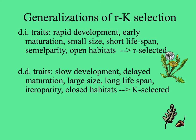Organisms that develop rapidly, mature early at a small size, with a short lifespan, may also be semelparous and colonize open habitats — these are R-selected species. At the other extreme, those more subject to density-dependent factors develop slowly, have delayed maturation at a large size, live a long time, reproduce many times, and are successful in closed habitats — these are K-selected species.